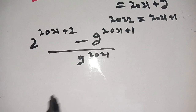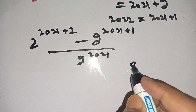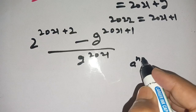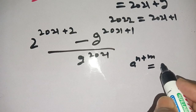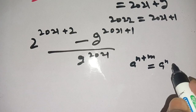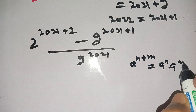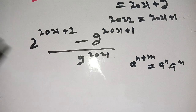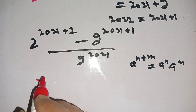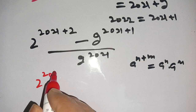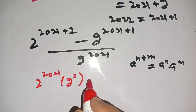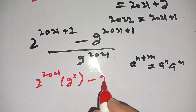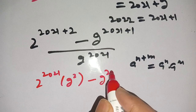In the next step we apply the identity: a power (n plus m) equals a power n times a power m. On applying this identity we get: 2 power 2021 times 2 power 2, minus 2 power 2021 times 2, divided by 2 power 2021.